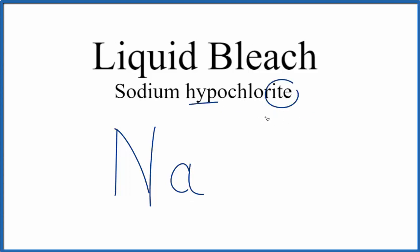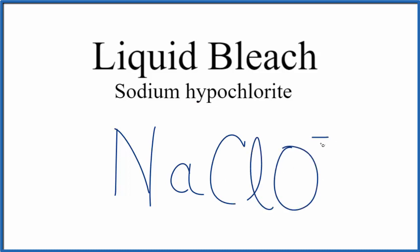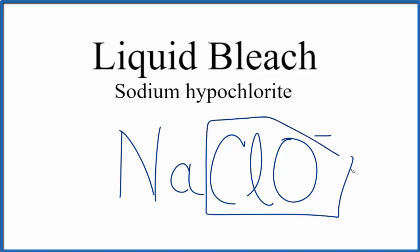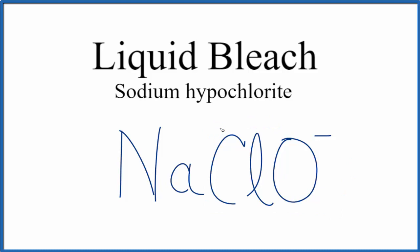Hypochlorite is a polyatomic ion, so we either memorize that hypochlorite is ClO⁻, or we look it up on a table of polyatomic ions. At this point we have a formula for liquid bleach: NaClO⁻, where the negative charge applies to the whole ion.